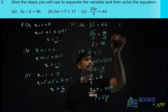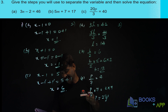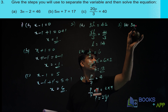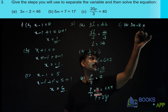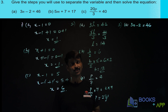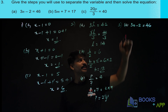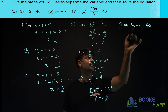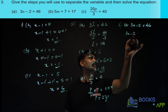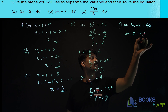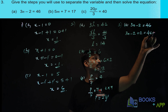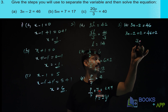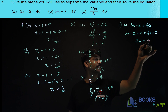Now let us solve the third question: give the steps you will use to separate the variables and then solve the equation. The first one is 3n minus 2 is equal to 46. We cannot eliminate 3n minus 2 at a time, so one by one we have to eliminate. We have to remove minus 2 from here. To remove minus 2, you should add plus 2 on both sides. So minus 2 plus 2 gets cancelled, and you will be getting 3n is equal to 46 plus 2, that is 48.